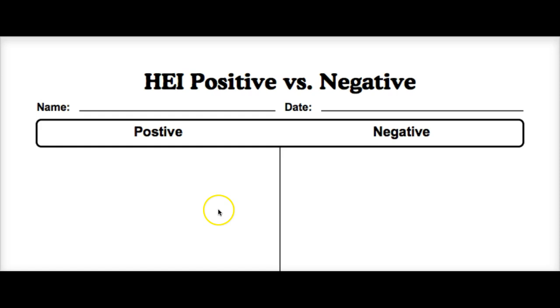Now you should have a list of positive HEI examples. We're going to do the same for negative — you're going to get another minute. When the minute's up, you're done. Pause this video if you or your partner is not quite ready, then hit play and we'll start.